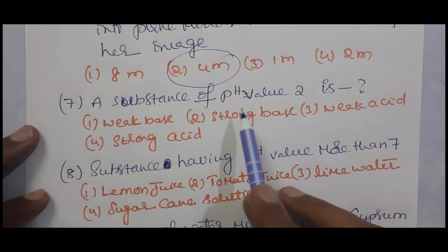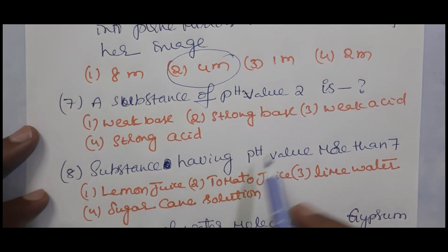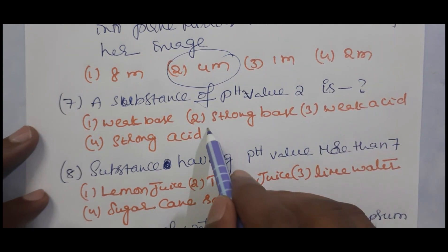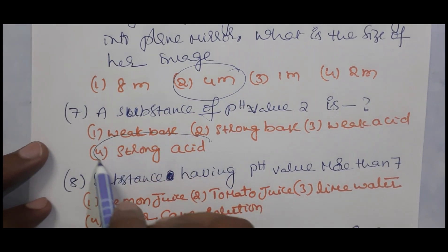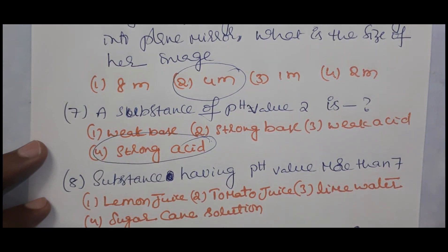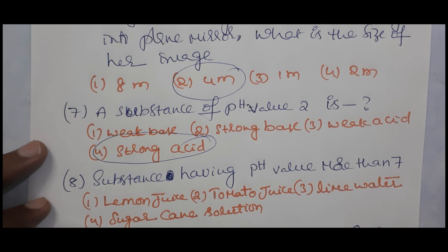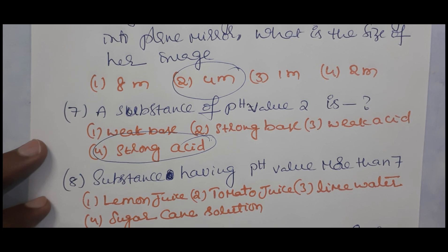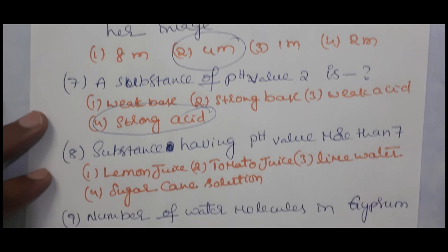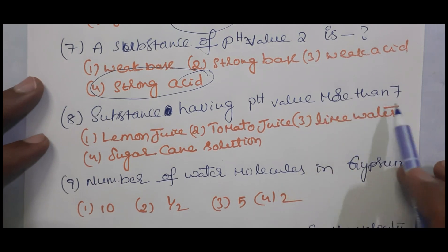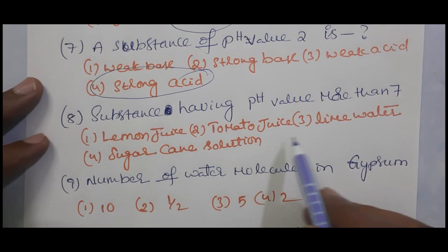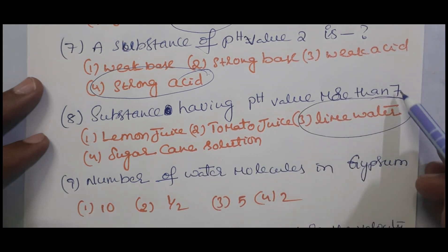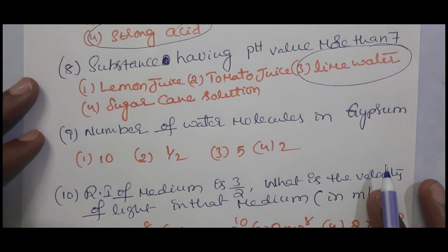A substance with a pH value of 2 is a strong acid. pH values 0, 1, 2, 3 are strong acids; 4, 5, 6 (less than 7) are weak acids. A substance with pH more than 7 is basic. Among lemon juice, tomato juice, lime water, and sugar cane solution — lime water is basic in nature, having a pH value more than 7.